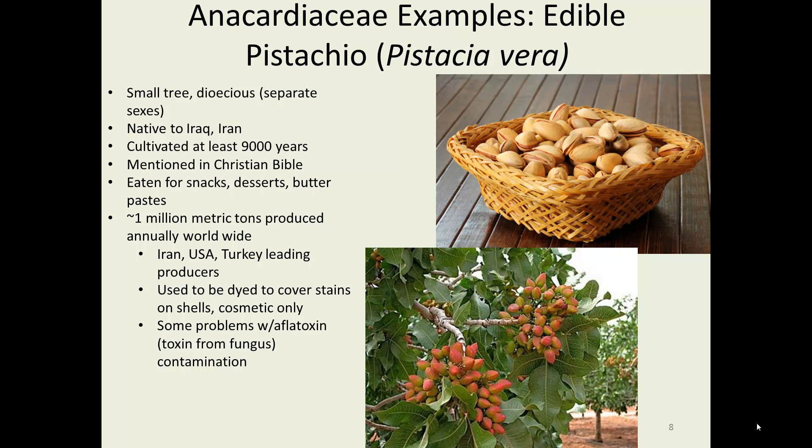Today there are some concerns with pistachios in that they're prone to getting a fungus that produces aflatoxin, which is a nasty neurotoxin you want to stay away from. If you ever see any cashews that have a sort of black powder on them, don't even touch them, let alone eat them — get rid of them quickly.